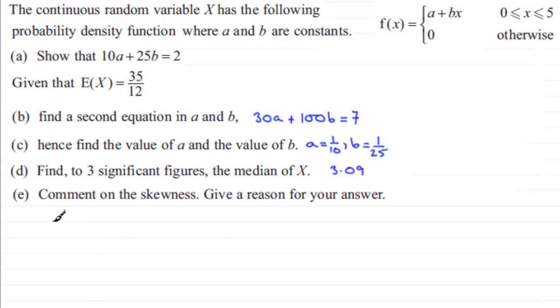So let's see how we do this. Well, first of all, what we know is that the mean E(X), the expected value of X, we're told is equal to 35/12.